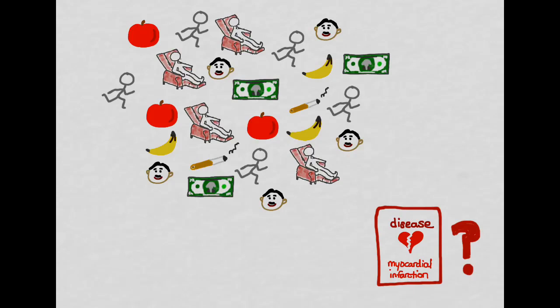When we start to figure out the relationship between physical activity and myocardial infarction, we start with a situation where we have a whole bunch of different people — some physically active and some not — and they also vary in other characteristics. Depicted here are the confounding variables we talked about: income, diet, smoking, and sex. In a cohort study, we divide everyone into exposed and unexposed.